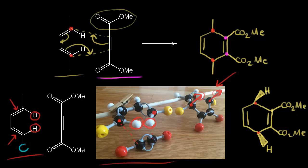Our outside substituents are these two methyl groups in blue. In the model set, the methyl groups are shown in yellow. When these two carbons go from sp2 to sp3 hybridized, notice what happens to the methyl groups — if the inside substituents go up, the outside substituents go down. So looking down at our ring, both methyl groups will be going away from us in space. Let's draw those in on a dash: that methyl group is going away from us, and so is this one.